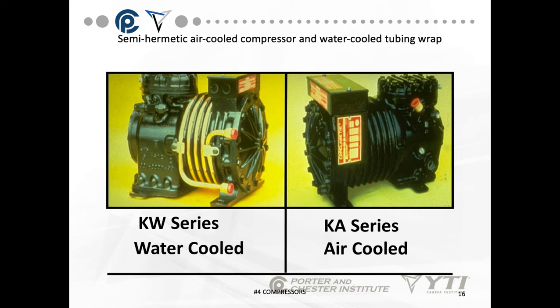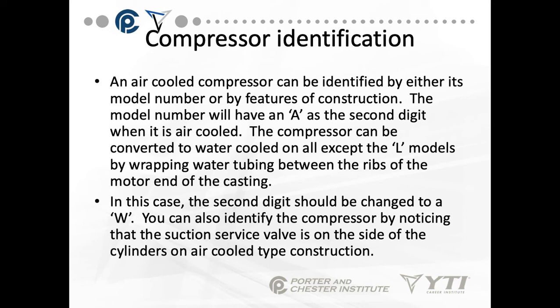For semi-hermetic air-cooled and water-cooled compressors: the model with KW in the designation is water-cooled; the one with KA is air-cooled. Air-cooled compressors can be identified by model number — the second digit will be 'A' — or by construction features. The compressor can be converted to water-cooled on all except L models by wrapping water tubing between the ribs of the motor end of the casting, changing the second digit to 'W.' On air-cooled types, the suction service valve is located on the side of the cylinders.